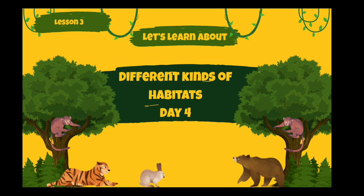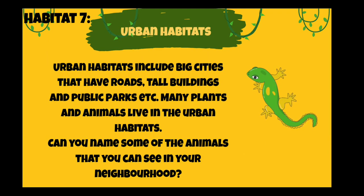We are studying about different kinds of habitats. Up till now we have studied about four terrestrial habitats: rainforests, grasslands, hot deserts, cold deserts, and tundra. We have also studied about two aquatic habitats: the ocean water habitat and the freshwater habitat. Today we are going to study about one new habitat — this is called the urban habitat. Urban habitats include big cities that have roads, tall buildings, and public parks.